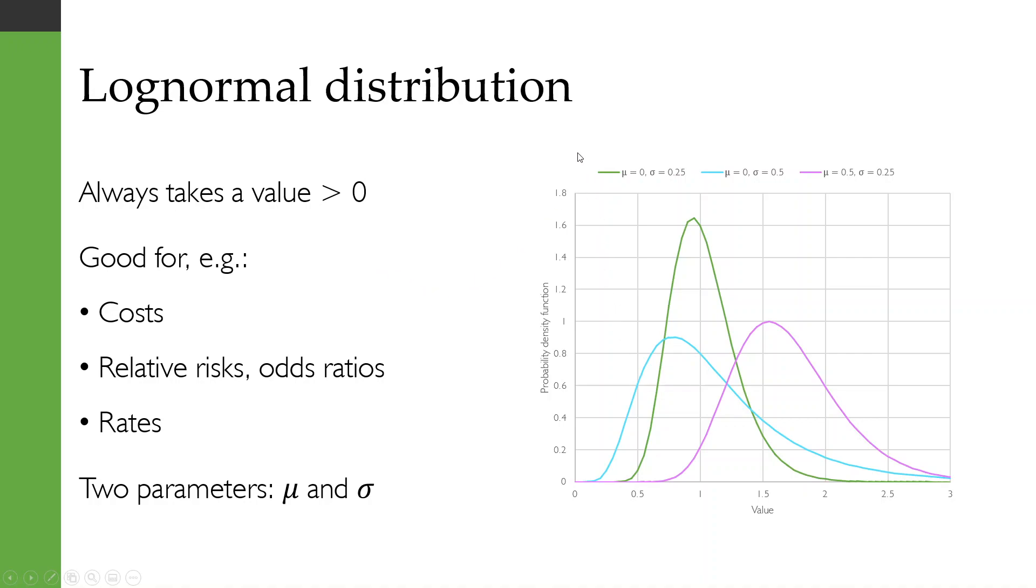So if we look at this graph on the right, you'll see I've got three different curves being shown with different values of mu and sigma. If sigma is higher, such as in this light blue curve, then you get a more dispersed curve.